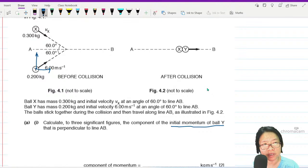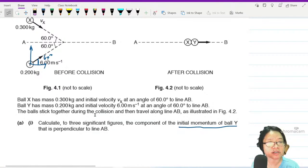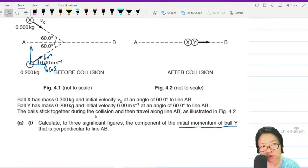So the velocity component here, if you do the alternate angle sign, this will be 60 degrees. And because this one is 60 degrees, this will be 6, it's beside the angle, so 6 cos 60. Perpendicular to the line AB will be 6 sine 60.